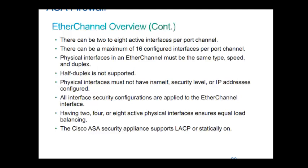You can have two links in the bundle, or four links, or eight links — no odd numbers. If you have three links, only two will be active. If you have five links, four will be active. If you have nine links, eight will be active. That is how the hashing algorithm works to do load balancing.